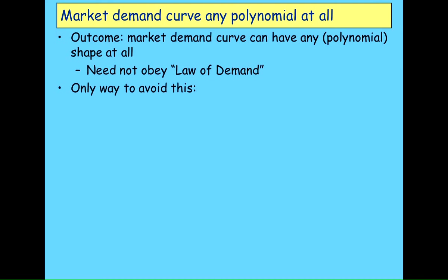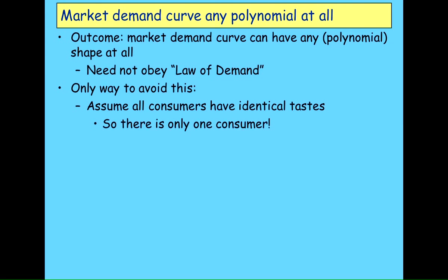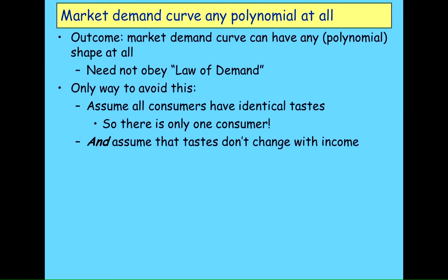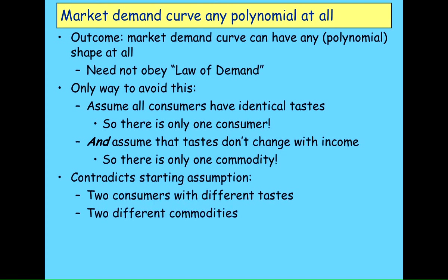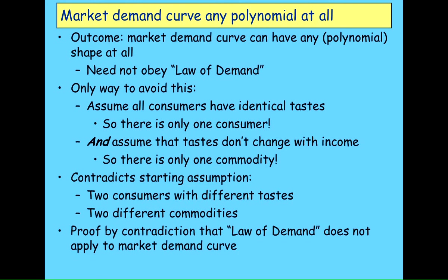The only way to avoid it is, first, to assume that all consumers have identical tastes — so there's only one consumer — and second, to assume that tastes don't change with income, which means there's only one commodity. That is a proof by contradiction, because you started with two consumers with different tastes and two different commodities. Proof by contradiction: the law of demand doesn't apply to the market demand curve, let alone to the entire economy.